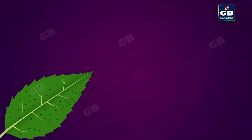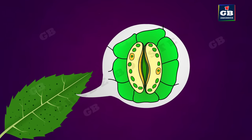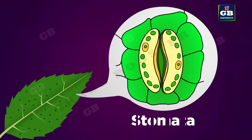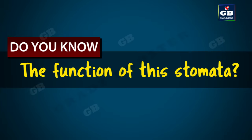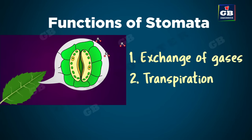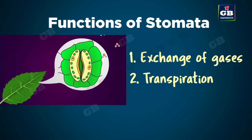Epidermis present on the leaf has small pores called stomata. Each stomata is protected by a pair of kidney-shaped guard cells. Stomata have two functions: they are essential for exchange of gases, and they help in the process of transpiration.